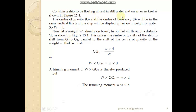Consider a ship floating at rest in still water on an even keel — remember, even keel means the ship has no trim. In most conditions we want ships to be on even keel. The center of gravity and center of buoyancy will be on the same vertical line, and the ship will be displacing her own weight of water, so weight and buoyancy are equal. Now let a weight w already on board the ship be shifted aft through a distance d as shown.